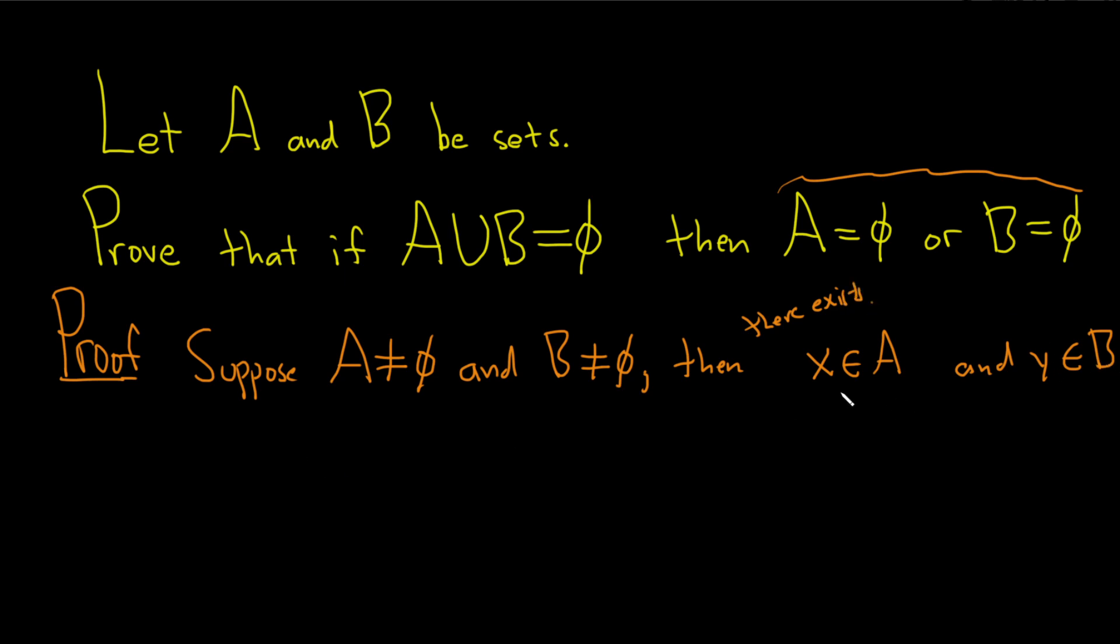And so note that this means that X is in A, which is a subset of A union B. So X is in A union B, and that basically means that A union B is non-empty. So we didn't even need to use the other condition. We didn't need to use this.